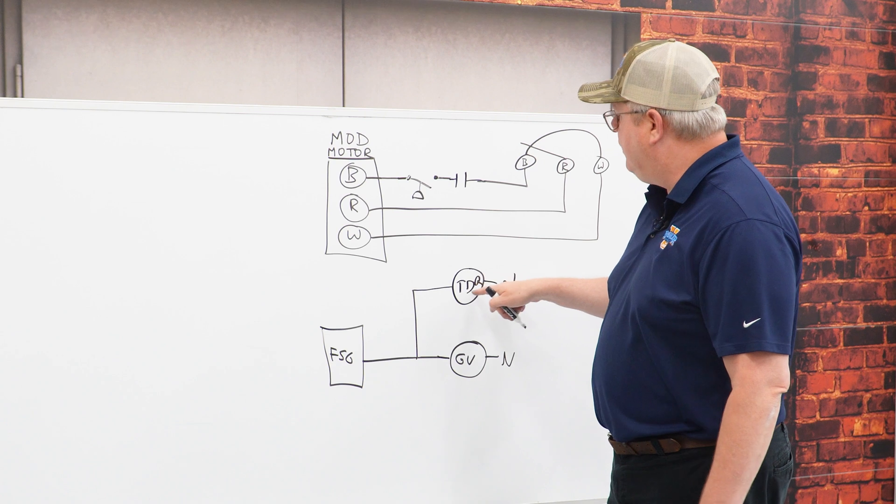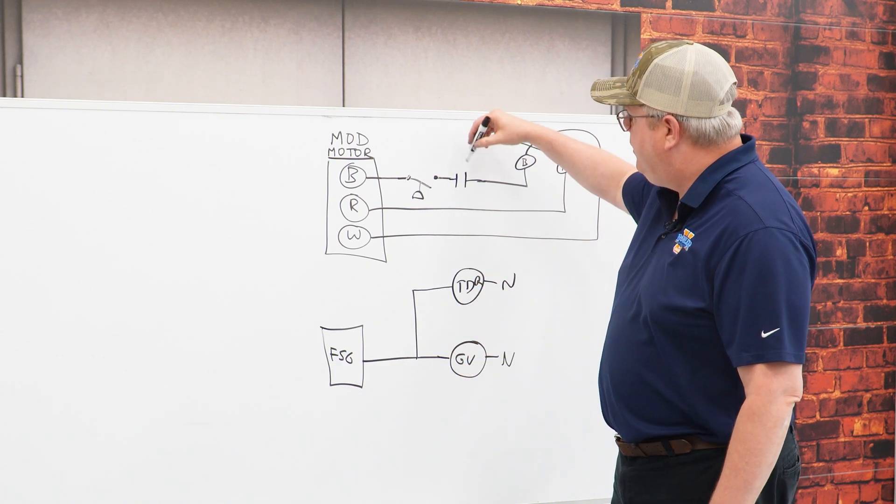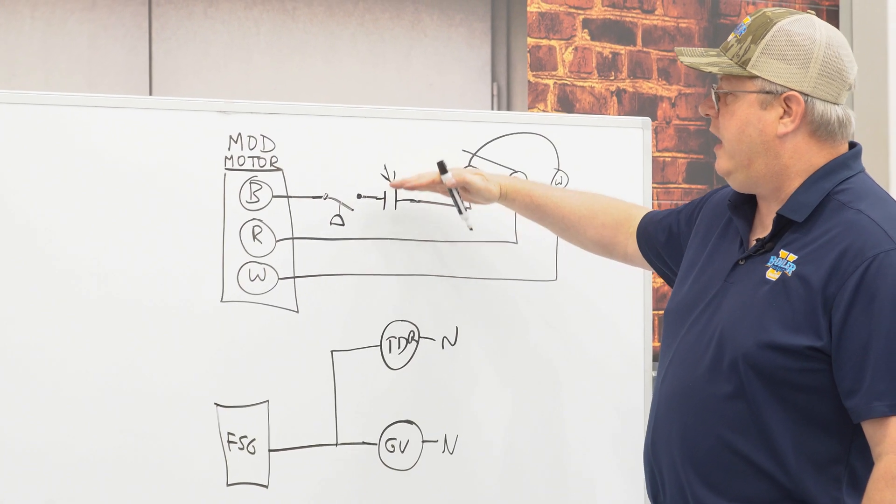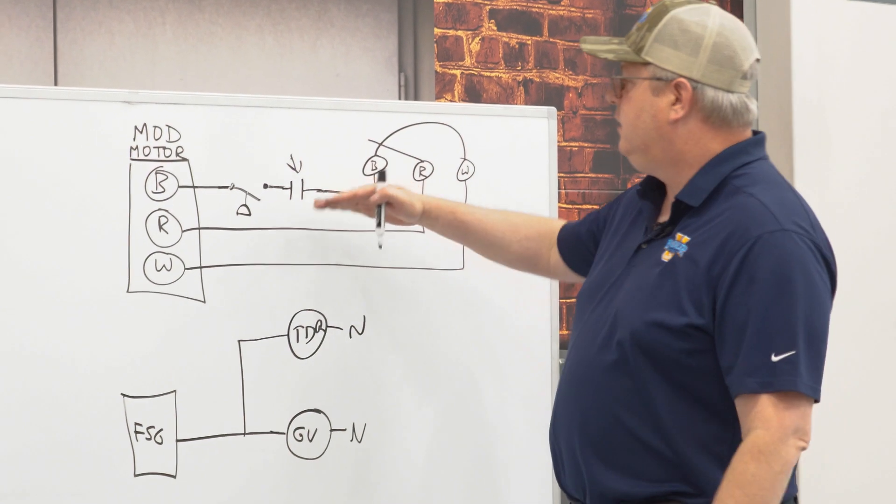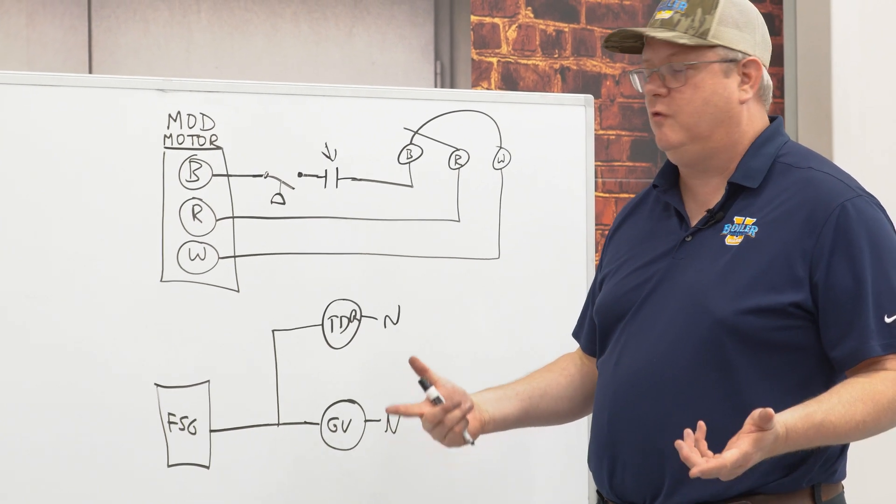So we've got a time delay relay down here, and when our flame safeguard energizes our gas valve, then we'll have a delay here—two minutes, five minutes, whatever that duration is—to prevent it from coming out of low fire. So that's going to inhibit its tendency to short cycle.